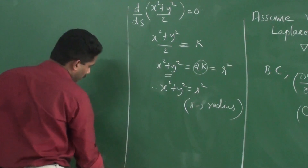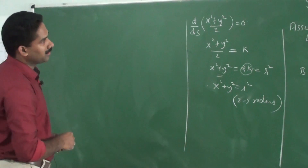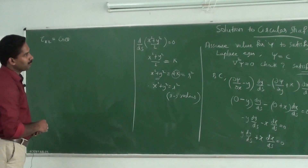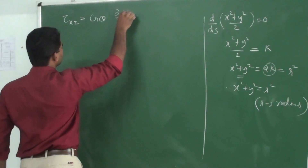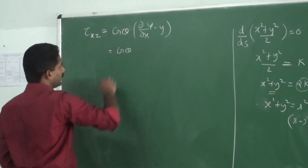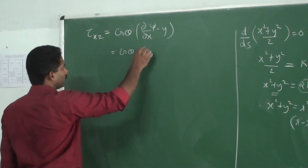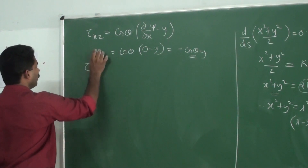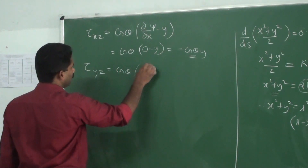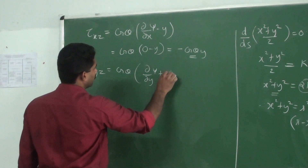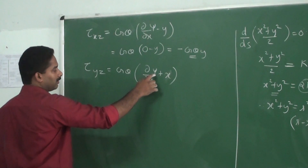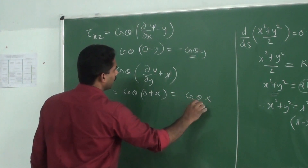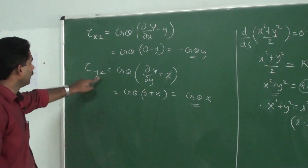Now find the shear stress values. How to find the stress values? The shear stress tau_xz is equal to G·θ·(∂ψ/∂x − y). Since psi is a constant, the first value ∂ψ/∂x goes to 0. So tau_xz = G·θ·(0 − y) = −G·θ·y. Similarly, we can find the value of tau_yz: that is G·θ·(∂ψ/∂y + x). Again ∂ψ/∂y goes to 0 because psi is a constant. So tau_yz = G·θ·(0 + x) = G·θ·x.